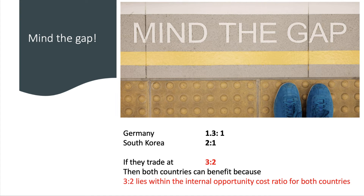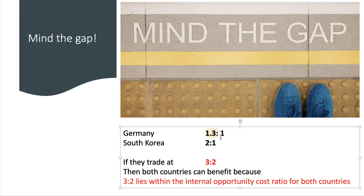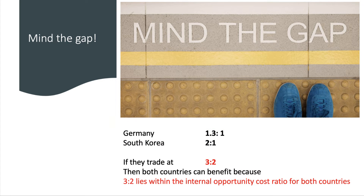Both countries need to benefit — mind the gap. Germany's opportunity cost ratio is 1.3 to 1; South Korea's is 2 to 1. There's a gap between these numbers, and anything which lies in between will work. Let's say three for two. So Germany now gets one and a half LCD screens instead of just 1.3, and South Korea has to give up one and a half LCD screens for every charger instead of two. Both countries benefit because three screens for two chargers lies within the internal opportunity cost ratio for both countries.